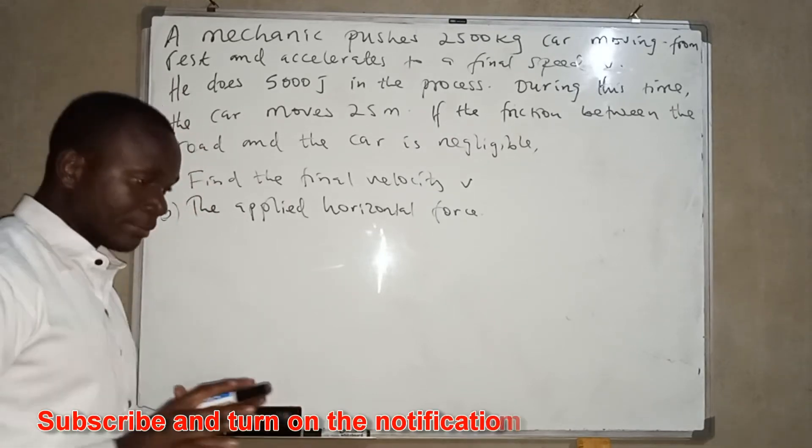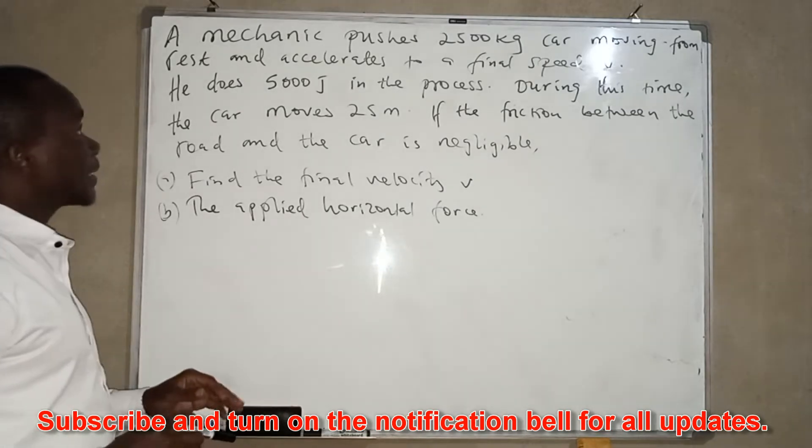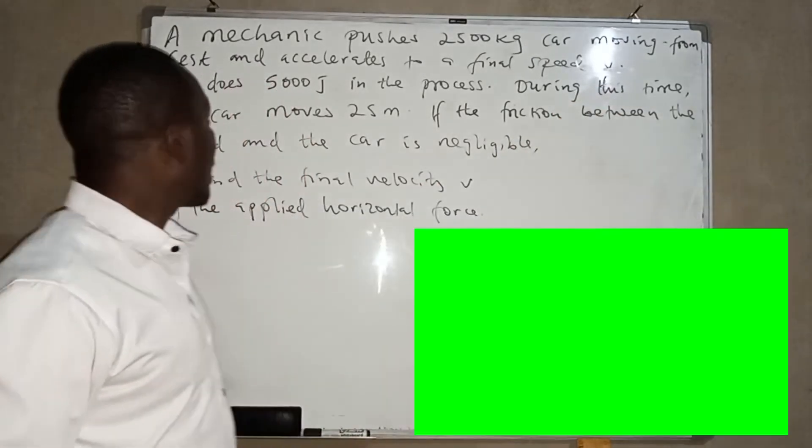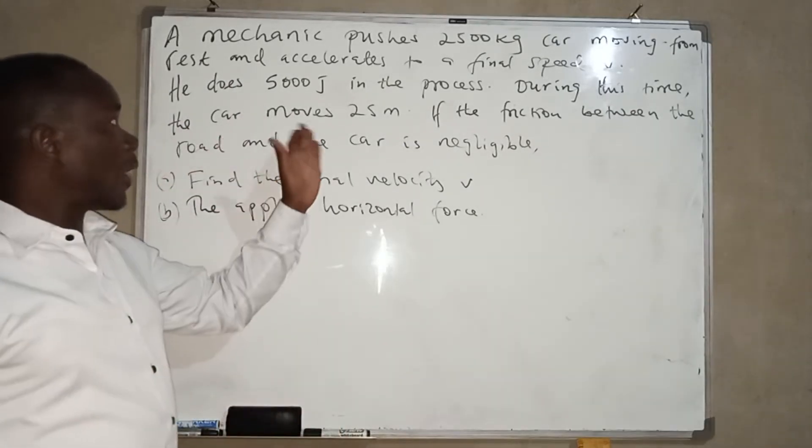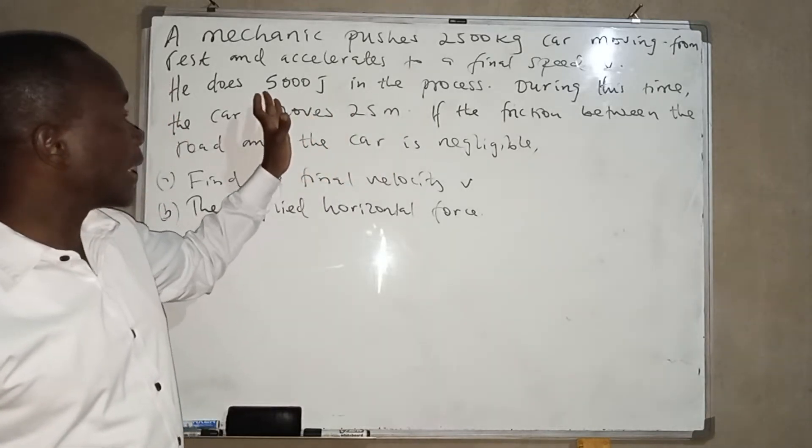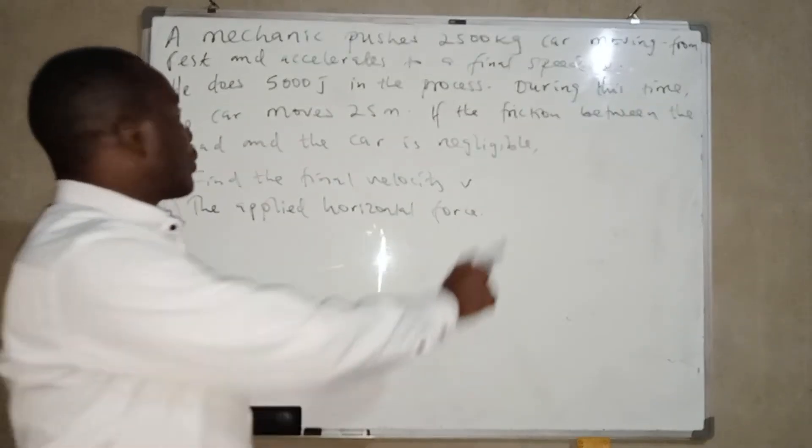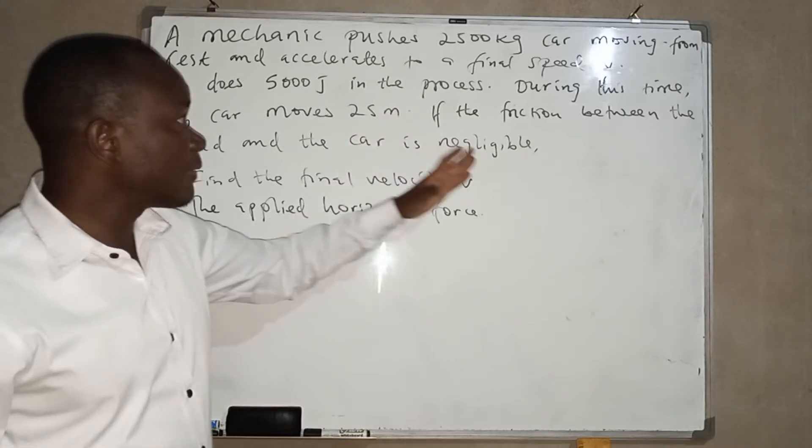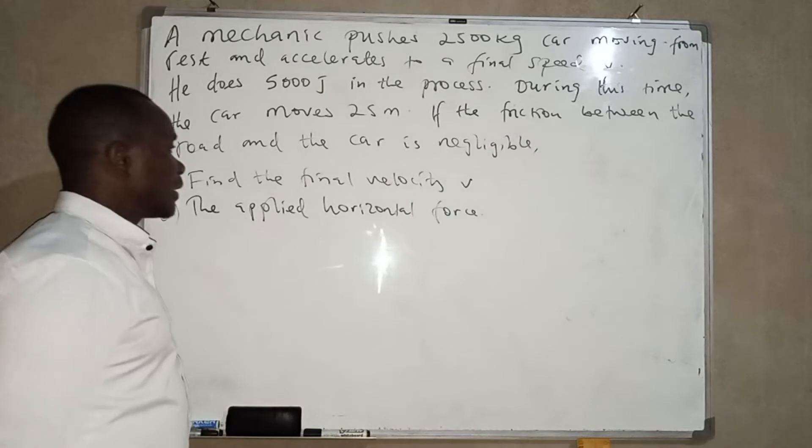A mechanic is pushing a vehicle from rest and it accelerates. Now it is coming from rest. He does 5,000 joules in the process, so this is the work done in the process of pushing the vehicle. During this time, the car moves 25 meters.